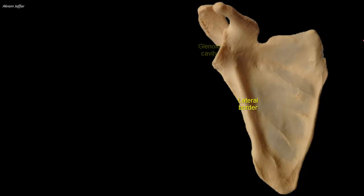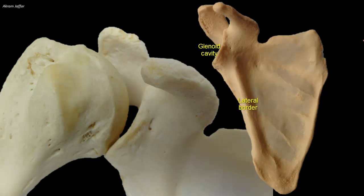Superiorly, the lateral surface of the scapula has a glenoid cavity. Glenoid means socket. This glenoid cavity receives and articulates with the head of the humerus at the glenohumeral, or shoulder, joint. The glenoid cavity is shallow, concave, and oval.